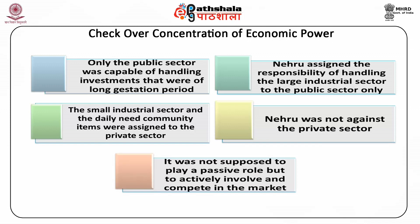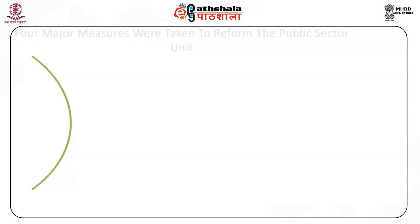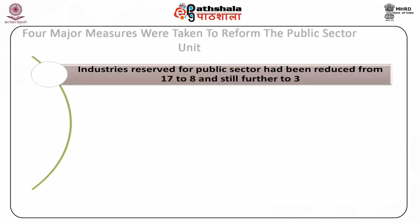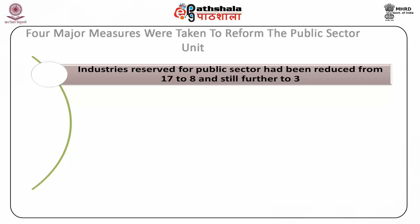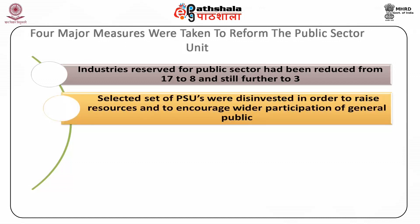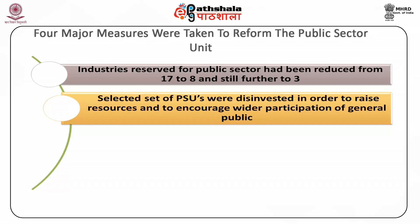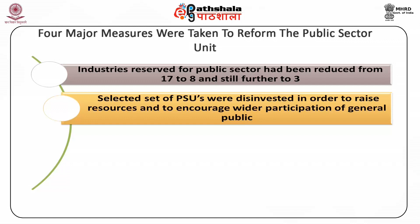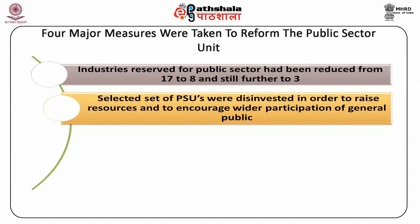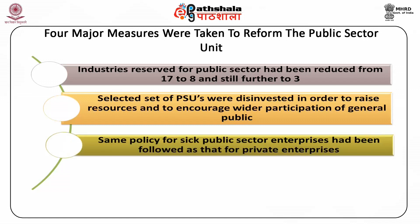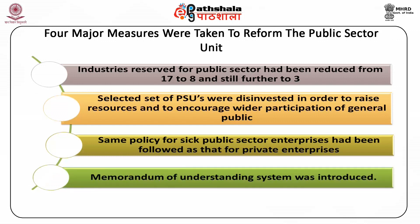It was not supposed to play a passive role but to actively involve and compete in the market with other private sector firms in the same field. Four major measures were taken to reform the public sector unit. First, industries reserved for public sector had been reduced from 17 to 8 and still further to 3. Second, a selected set of PSUs were disinvested in order to raise resources and to encourage wider participation of general public and workers in the ownership of the public enterprises. Third, the same policy for sick public sector enterprises had been followed as that for private enterprises. Fourth, the Memorandum of Understanding System was introduced.